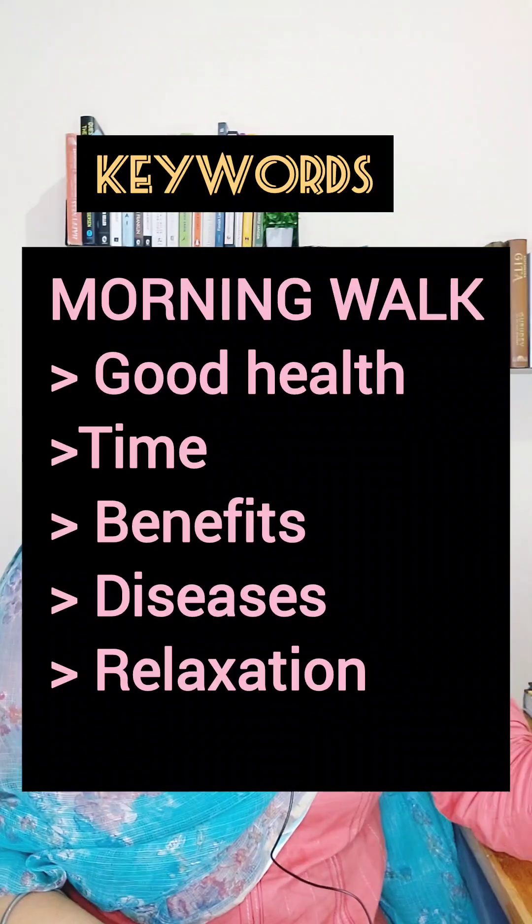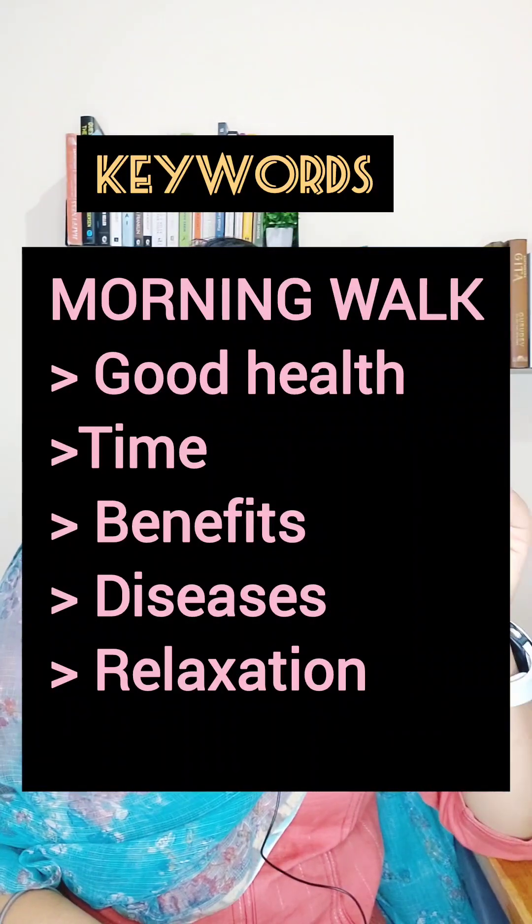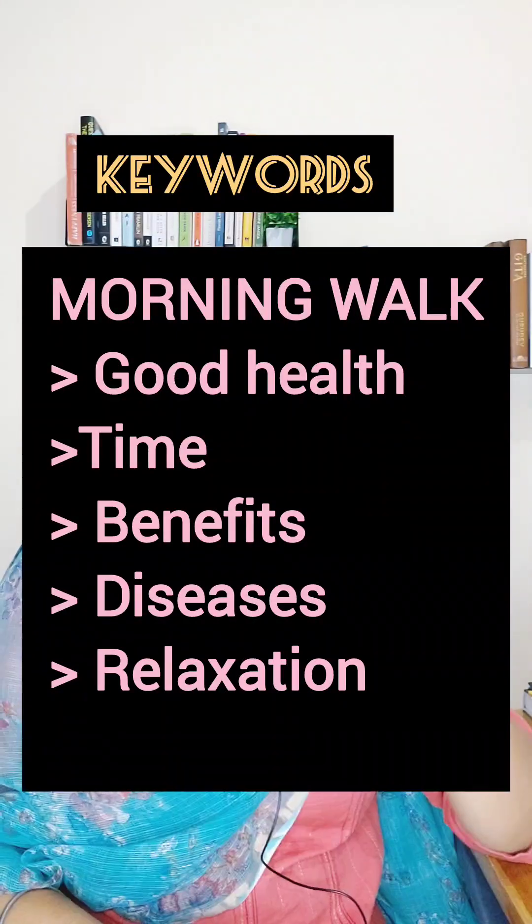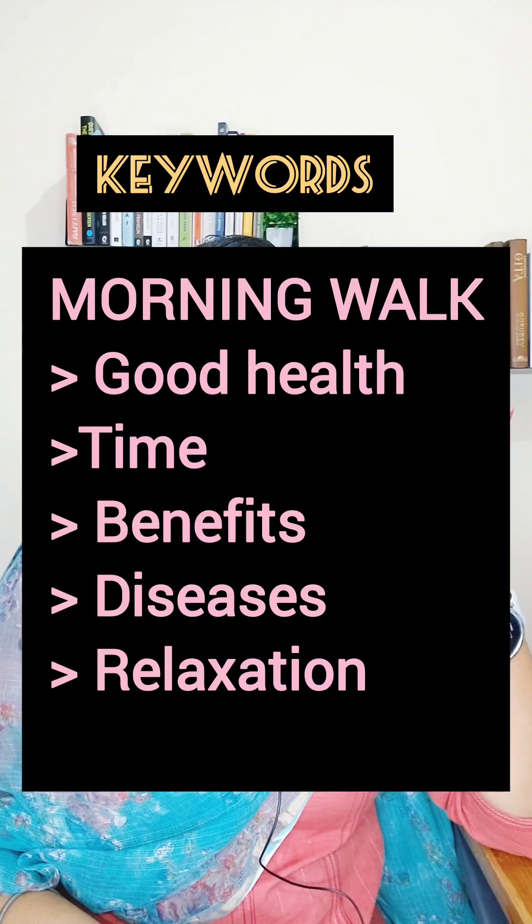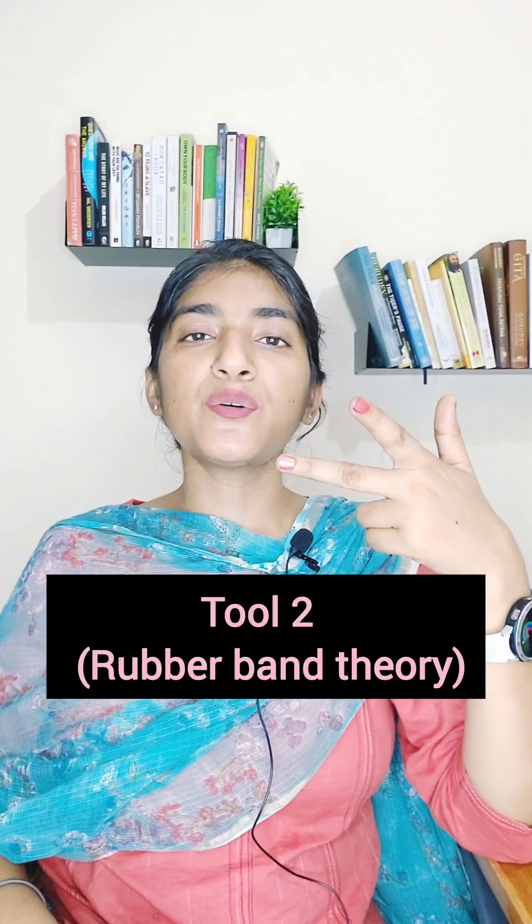From every paragraph, pick a keyword, remember it, memorize it, and then you can write it down. We know these techniques — we used them in our own time — but sometimes we assume the child already knows. We need to tell them. For example, if the essay is on 'morning walk' and it has five paragraphs: paragraph one — time, paragraph two — good health, paragraph three — benefits, paragraph four — diseases, paragraph five — relaxation. You take those keywords and on their basis you create the whole paragraph.